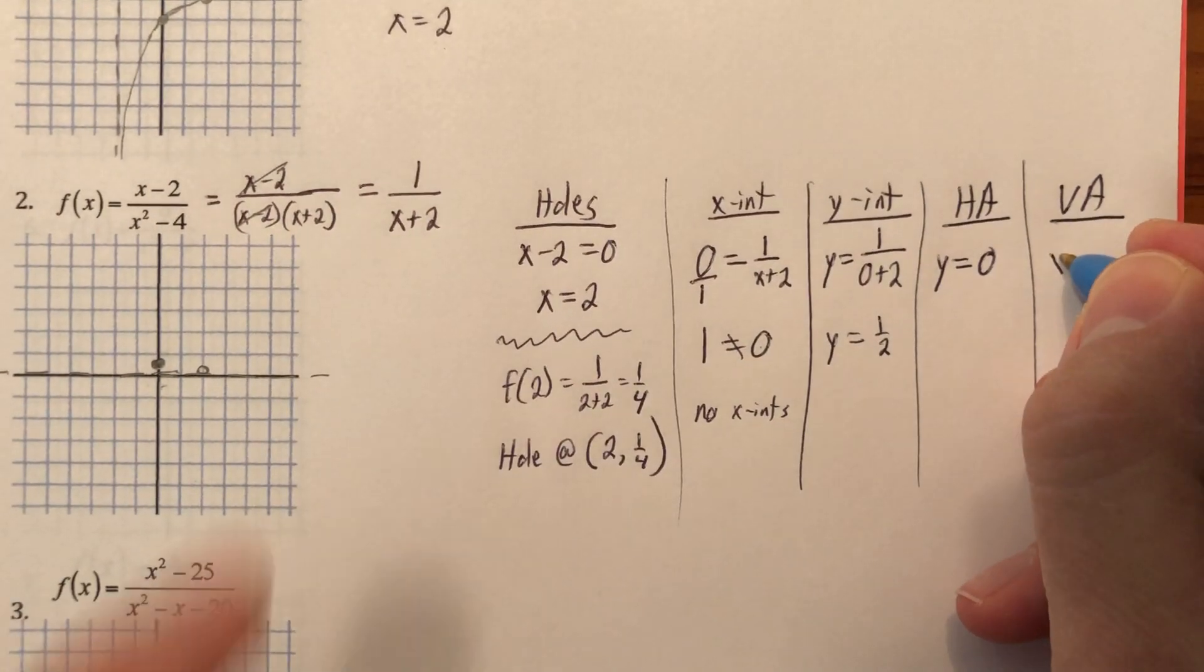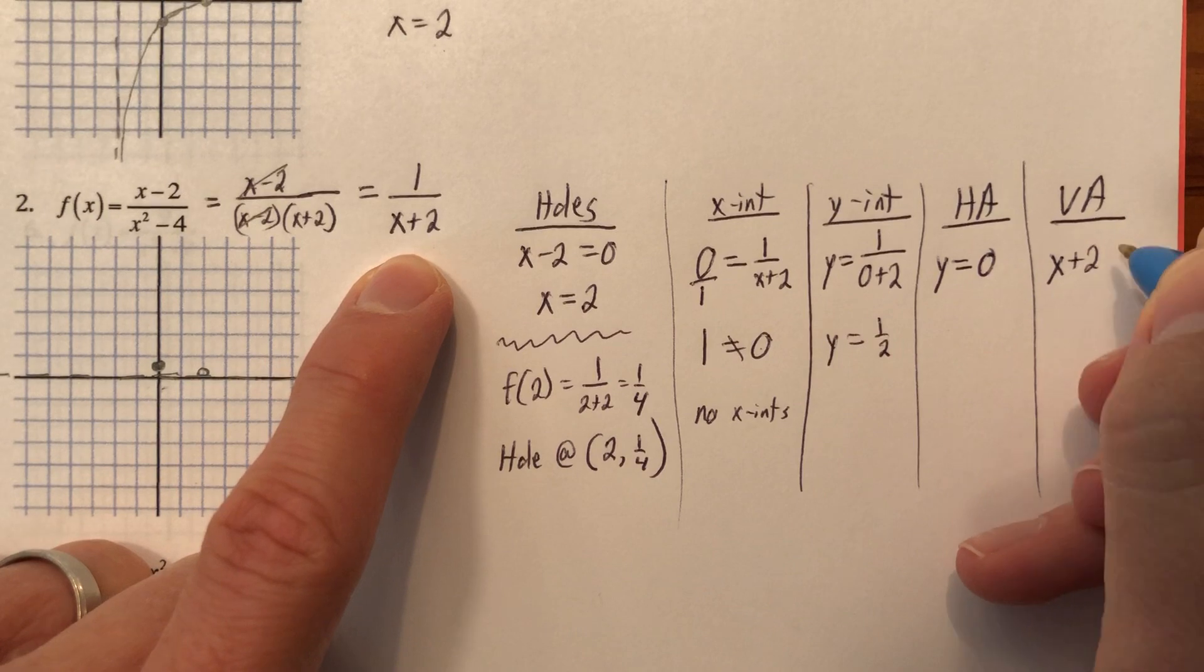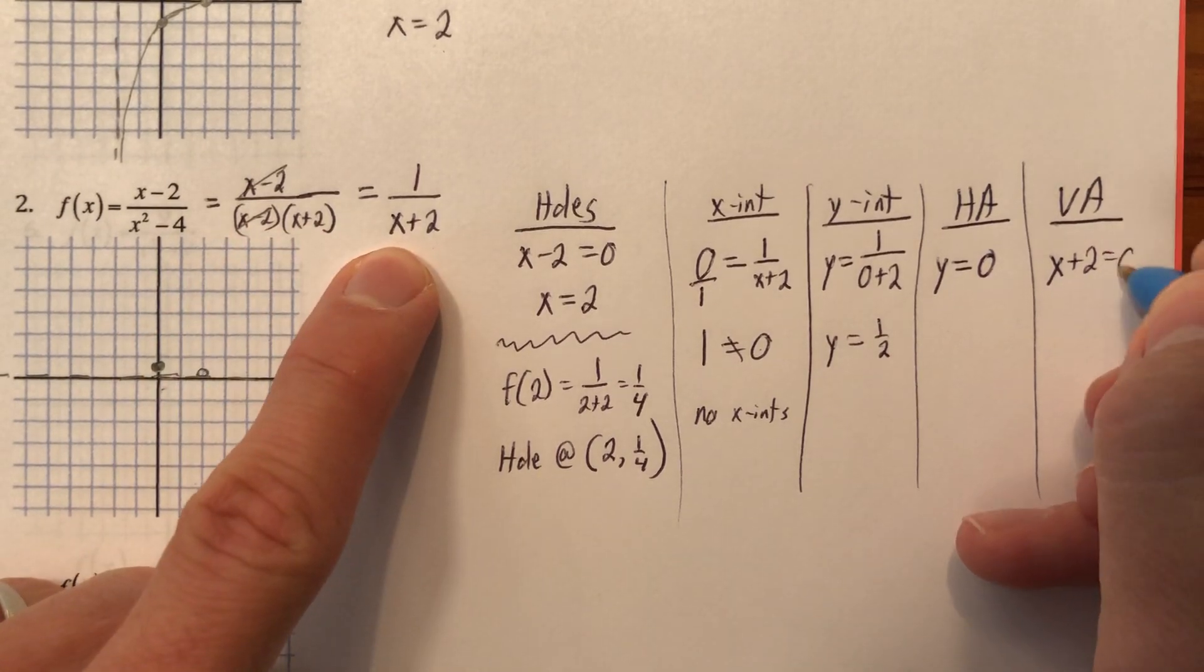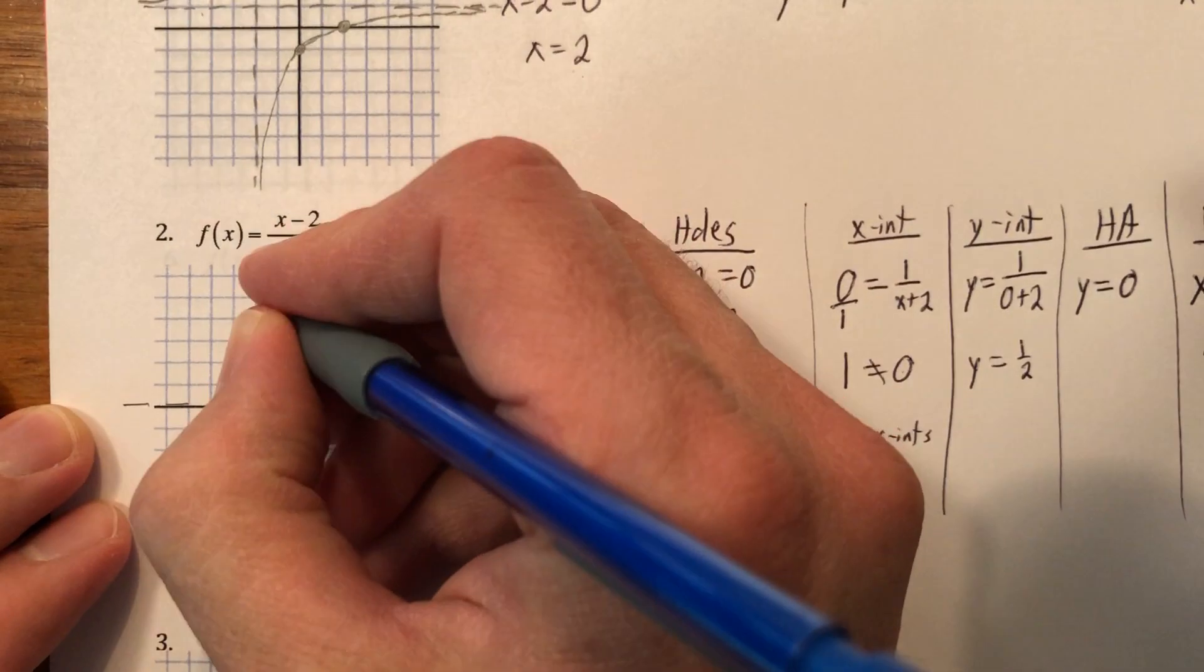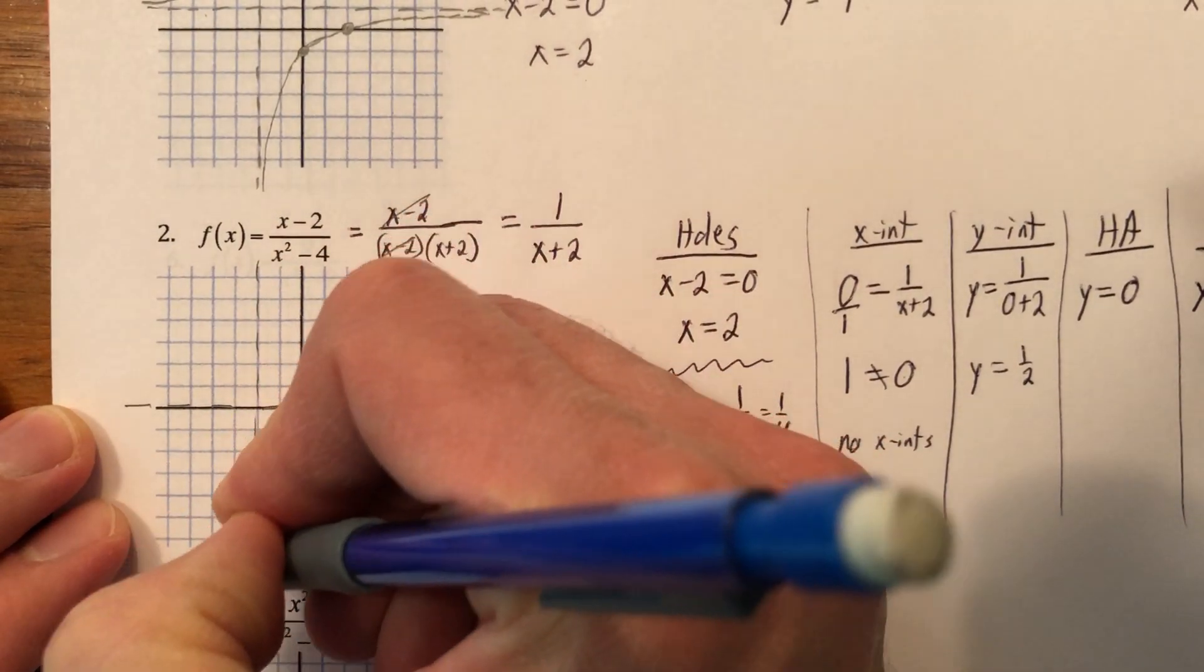So my vertical asymptote is, let's go here. Don't back up. Go to the end. And then it would be there. So x equals negative two. There we go.